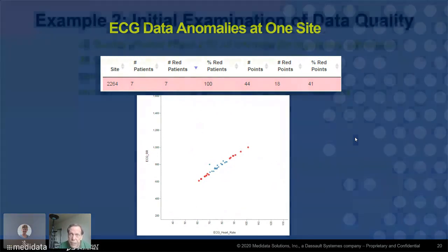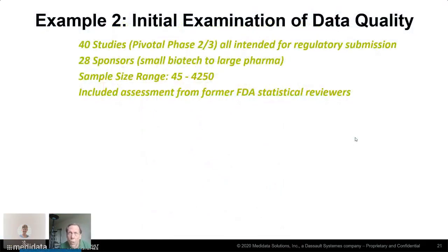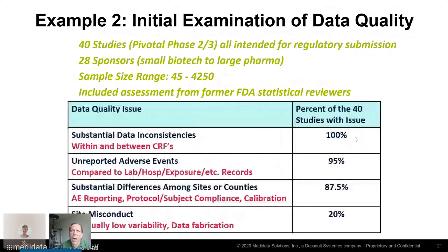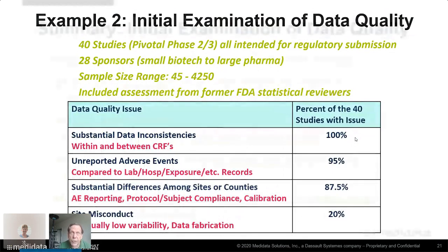Finding this and fixing it is an example of what we need to do. In another study at MediData, we looked at 40 clinical trials, and the bottom line is that every one of them had some kind of substantial data problem — the kind that could sabotage the success of a trial.